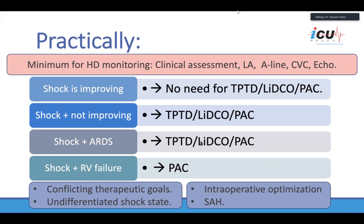During major operations for intraoperative optimization — such as liver transplant or major abdominal surgery — there is good evidence to suggest that using advanced hemodynamic monitoring devices helps these patients. Finally, in subarachnoid hemorrhage patients, because the best preventer of delayed ischemia is euvolemia, it would be ideal to connect these patients to one of these advanced hemodynamic monitoring devices.